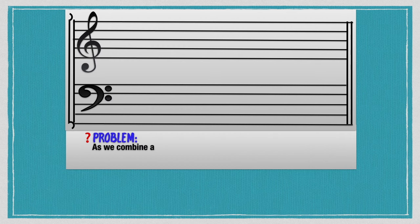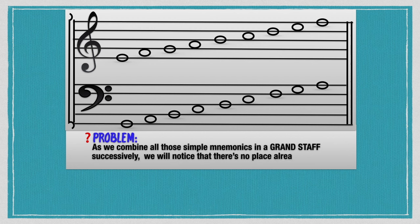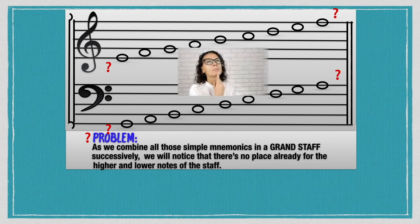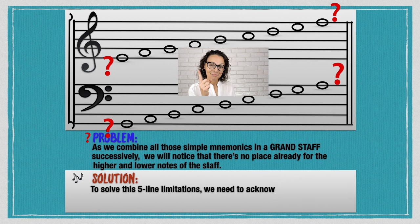The problem is, as we combine all those simple mnemonics in a grand staff successively, we notice there is no place for the higher and lower notes of the staff. But the solution is: to solve this five-line limitation, we need to acknowledge the role of the Ledger Lines.